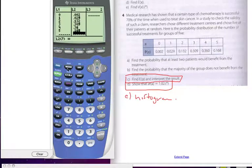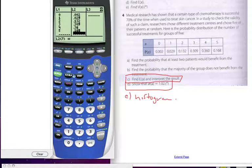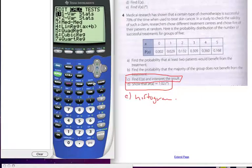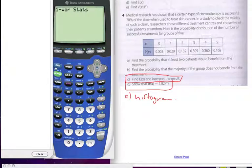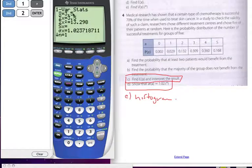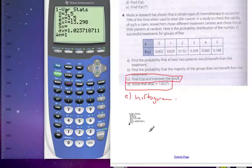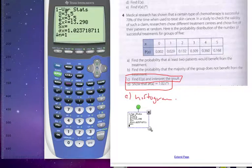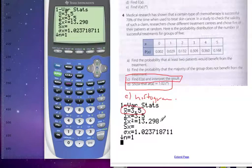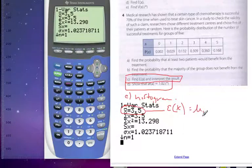And if I want to find the expected value, I go stat to my calculate menu, and I'm going to do one variable statistics. And I have to go L1, comma L2. And so if I look up here, I have the values I'm looking for. I have 3.5. This is my expected value here. This is the mean or expected value, or you could say it's the mean, mu sub x.